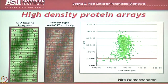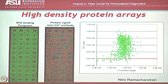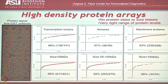93 percent of these spots are within two-fold of the mean, which means we're getting very even levels of protein on the chip. That's exactly what we wanted from an ideal array — very consistent, even levels of protein.